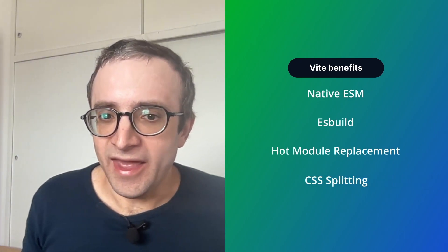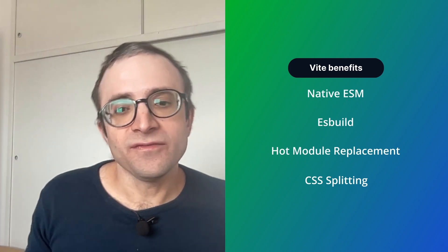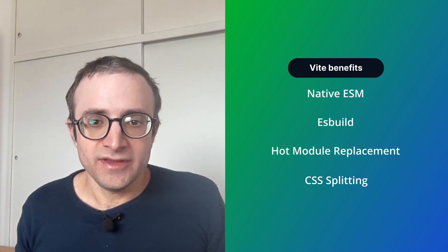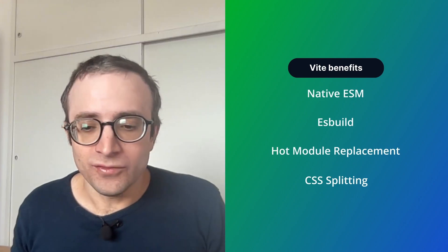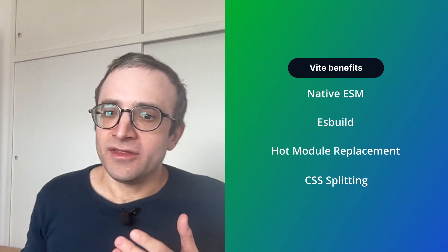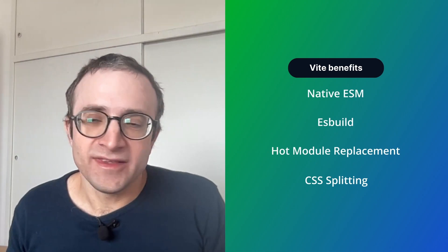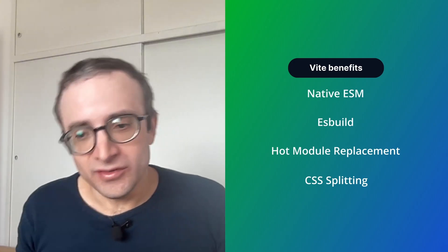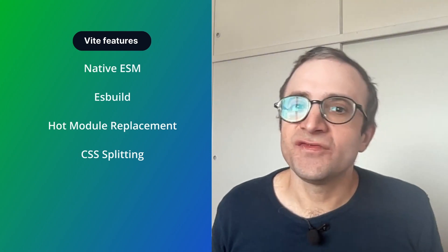The fourth benefit is CSS splitting. Vite can identify which CSS code is needed for the page we are viewing, and instead of serving the whole CSS file, it only serves the chunks needed for the current render. Files are loaded in async chunks when a component is invoked, so we don't spend time waiting for unnecessary CSS to be loaded. This makes the application faster and development more organic.